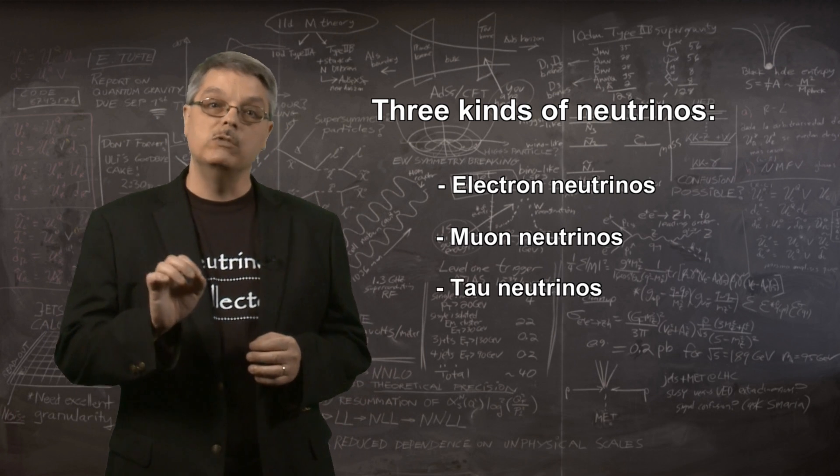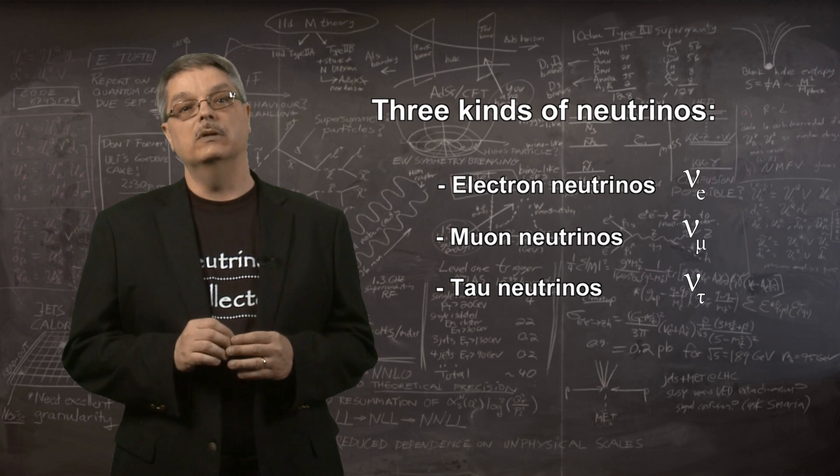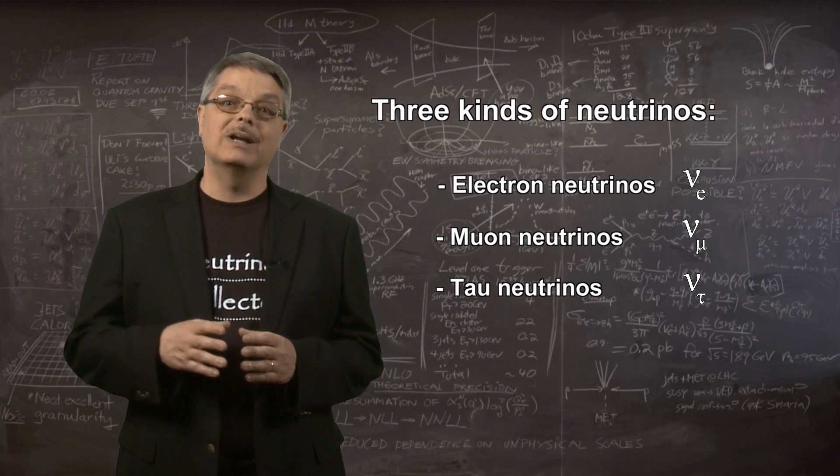Scientists use the lowercase Greek letter nu to indicate a neutrino, with a subscript to tell you what kind it is.